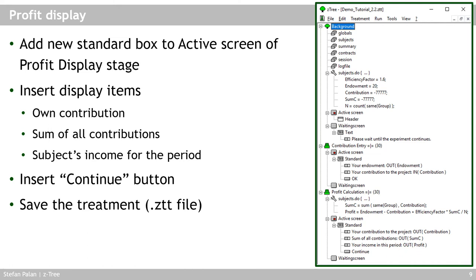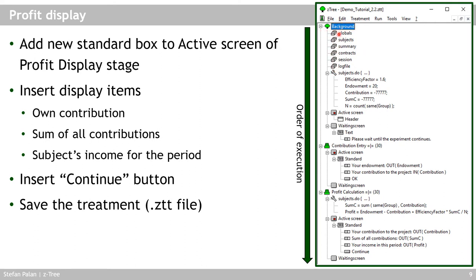If they click continue — remember we set 10 periods in the background — they start from the beginning again for the next period. One very important element of zTree is the order of execution. zTree really goes from top to bottom through the entire stage tree. It starts in the background, makes the settings there — 10 periods, exchange rate, number of subjects. Then it runs the program defining variables. Then it displays the contribution entry stage, then the profit display stage. If you click OK or continue, you start again from the top for the second period. It always runs through in sequence, as you can see in the stage tree.